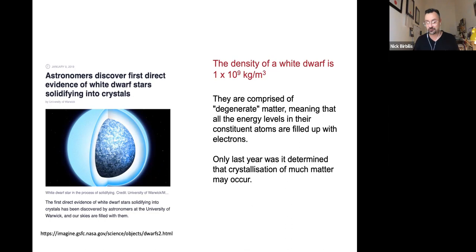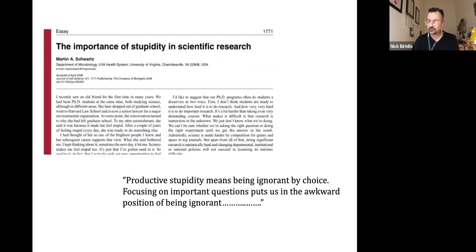And so this is because it's comprised of degenerate matter, which means that the energy levels in the constituent atoms are filled up with electrons. So only last year was it then actually determined that crystallization of such matter can actually occur. And this is the sort of stuff which is very important to understanding and driving our materials ambition and how we think about materials. And it's exactly the sort of stuff that you're not going to find in your introduction to material science book by Callister.